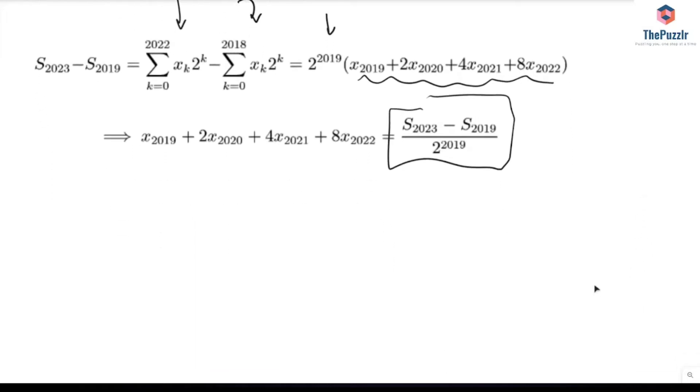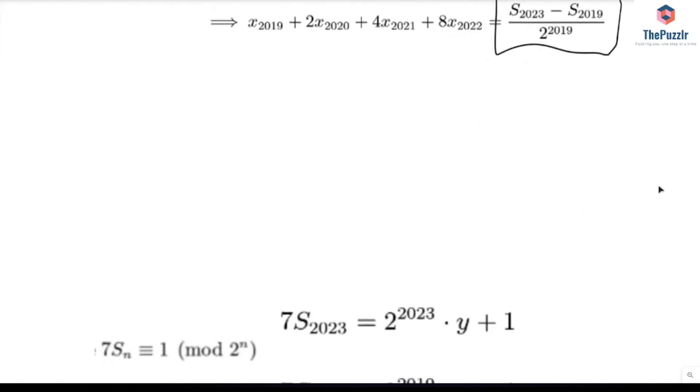So now we know that 7Sn is equal to 1 mod 2 to the power of n. Applying this for S of 2023, we know that 7 times S of 2023 equals 2 to the power of 2023 times y plus 1, since if you were to take this mod 2 to the power of 2023, this right hand side would just be 1. And then same thing for S of 2019.